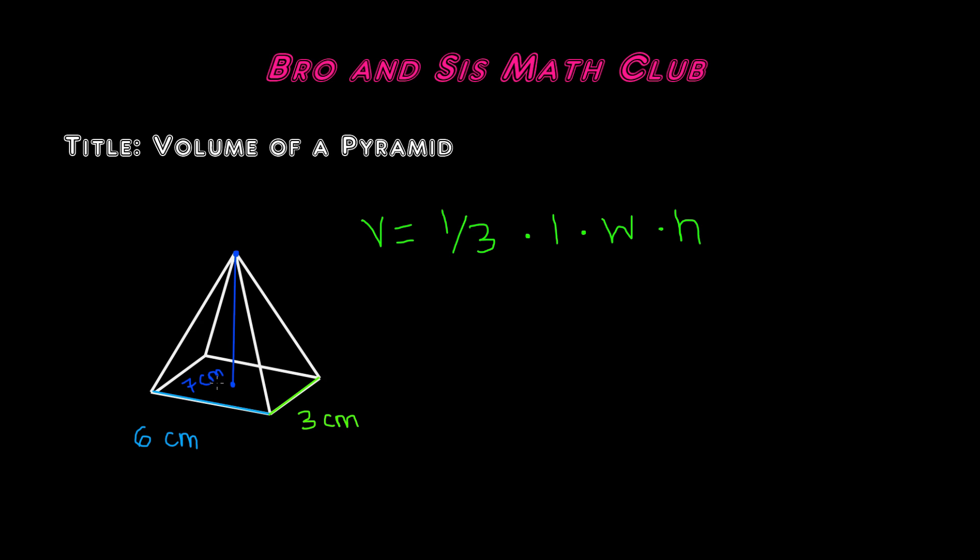Now that we have each of the values, let's go ahead and plug them into our formula and find the volume of this pyramid. So we have volume equals one-thirds times length, which is 6, times width, which is 3, and times height, which is 7.